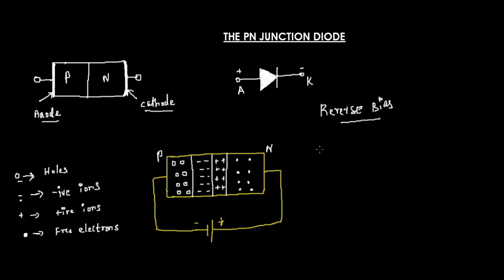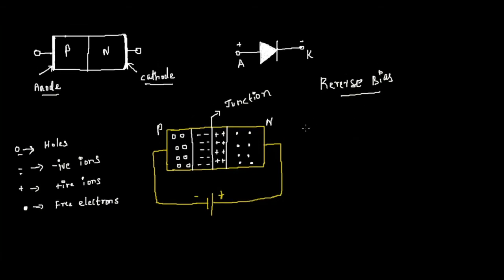This is the representation of the PN junction diode at the junction of the P-type and N-type. When you apply an EMF in reverse, the positive ions drift towards the left side of the diode, moving away from the junction and creating a depletion zone. The negative ions are also moving away from the junction, as you can see from the arrow marks.